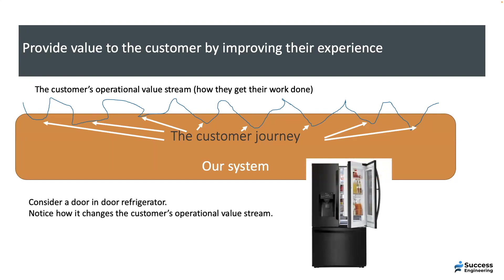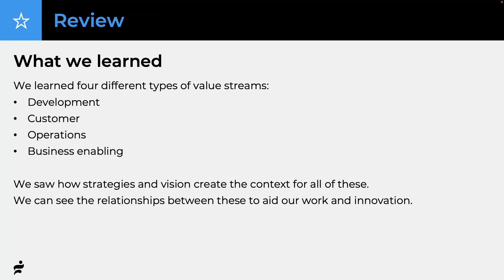The fridge has extra doors — you can open this smaller door and pull out drinks without letting all the cold air out. It's convenient, easier to stock, and lowers my electric bill. The customer journey sometimes has nothing to do with what you're directly doing — before this fridge I'd open the whole thing, lose cold air, bottles would block other bottles. This is an example of attending to the customer journey. To summarize: there are four types of value streams — development, customer, operations, and business enabling — the last three are operational value streams. Strategies and vision create the context for all of these, and understanding their relationships aids innovation.